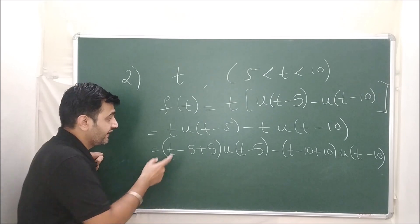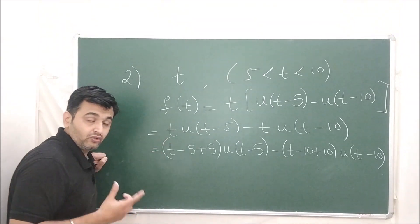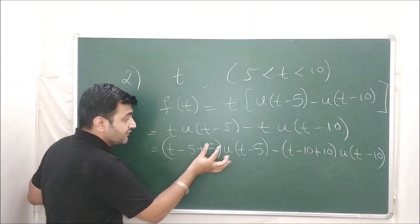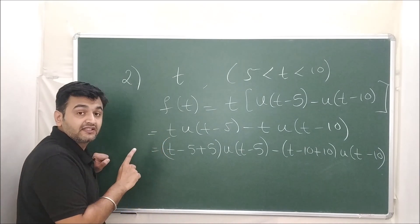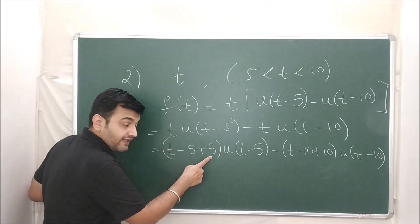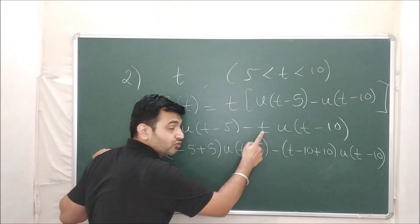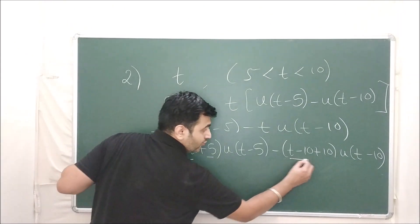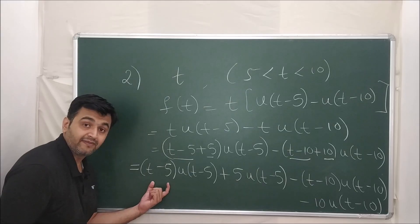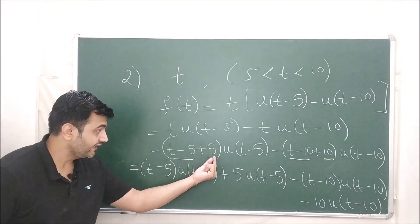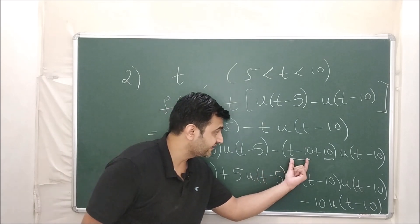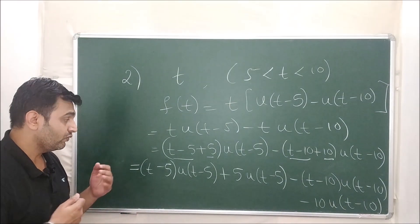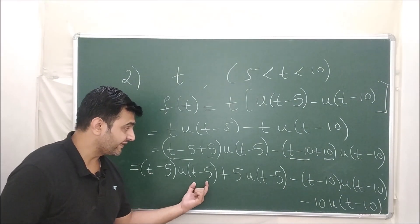Multiplying t inside: t · u(t − 5) − t · u(t − 10). To apply the second shifting theorem we need the form (t − a) · u(t − a). Here you have (t − 5), so adjust by writing t = (t − 5) + 5. Similarly for the second term, t = (t − 10) + 10. Expanding gives: (t − 5) · u(t − 5) + 5 · u(t − 5) − (t − 10) · u(t − 10) − 10 · u(t − 10). Now all terms are in the t − a form.